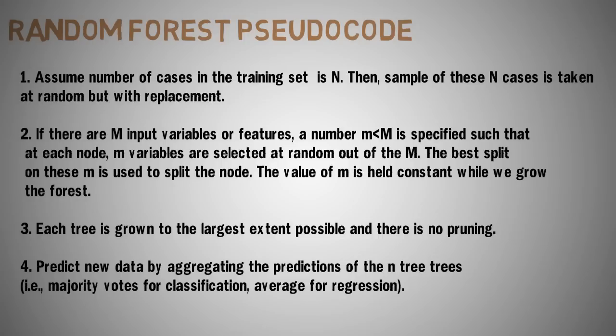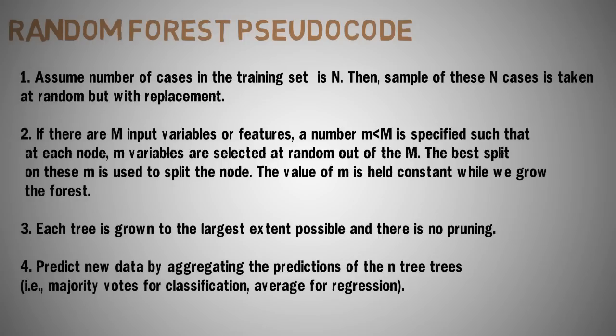And then we predict the data by aggregating the predictions of the N trees, which means majority votes for classification and average for regression.